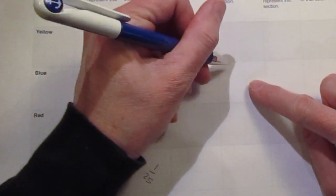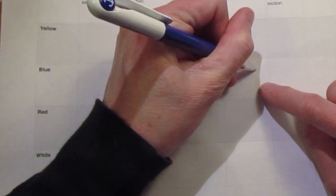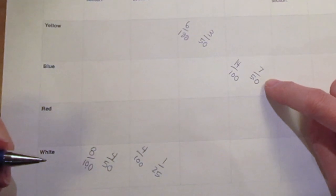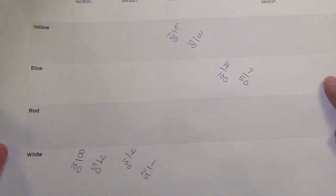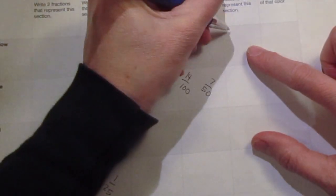When you finish this planning sheet and recording your equivalent fractions, you can watch video two to see the next steps for making your work of art.